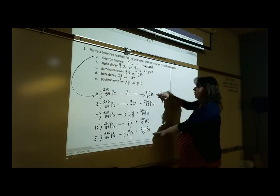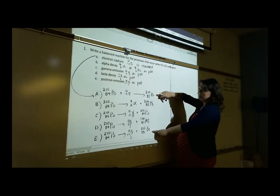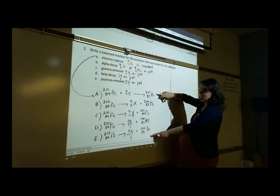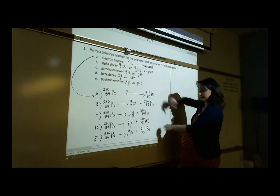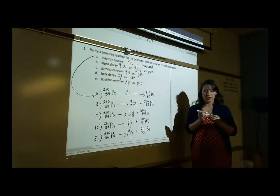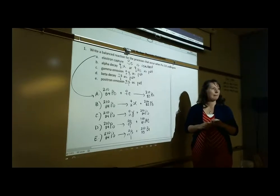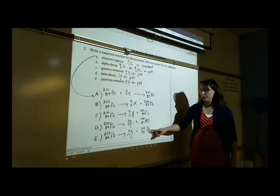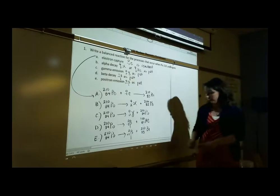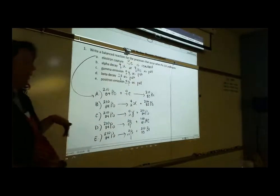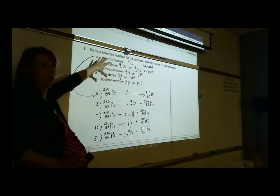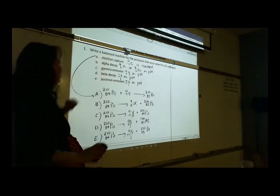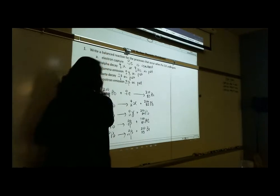Interestingly, the same isotope — bismuth — is produced by either electron capture or positron emission. Any questions on number one? You could put either reactant first; one plus two or two plus one is fine. The main thing is you have to commit your particles to memory in order to be able to do this.